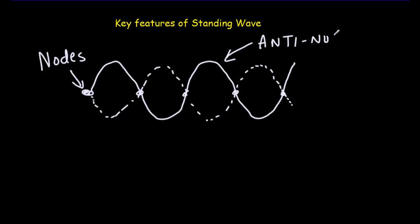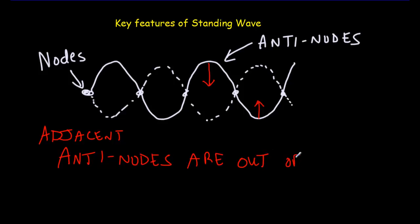But keep in mind a few features. Say this anti-node would be coming down right now. And the adjacent anti-node would be going up right now. So the two anti-nodes are exactly out of phase. When we say that they're out of phase, that means they have exactly the opposite phase. They're doing exactly the opposite thing. When one's going down, the other's going up.